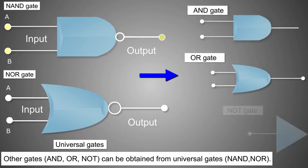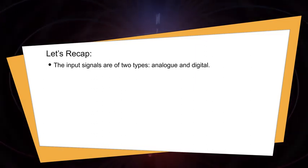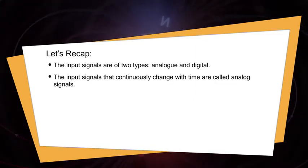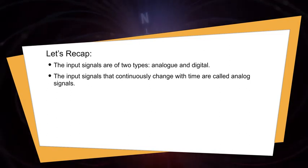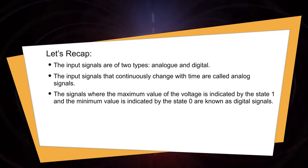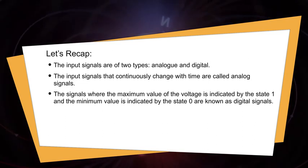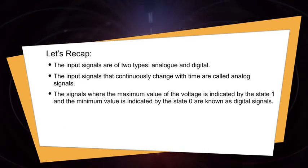The NAND and NOR gates are known as universal gates, as other gates like AND, OR, and NOT can be obtained from these gates. Let's recap: the input signals are of two types — analog and digital. Analog signals continuously change with time. In digital signals, the maximum value of the voltage is indicated by state 1, and the minimum value is indicated by state 0.